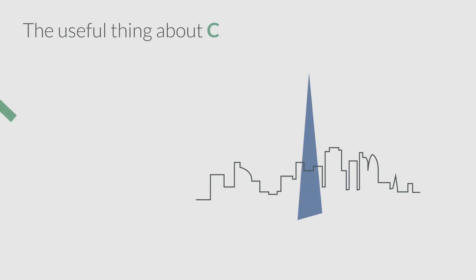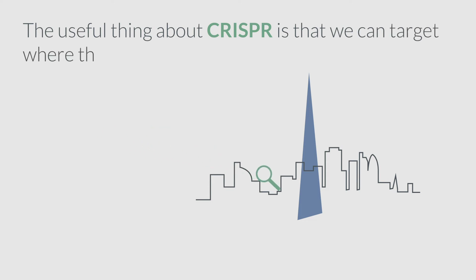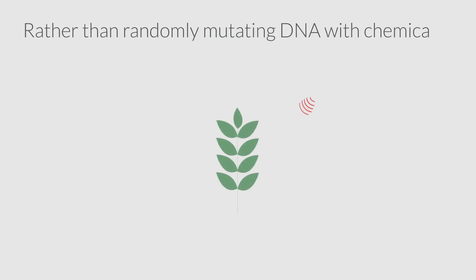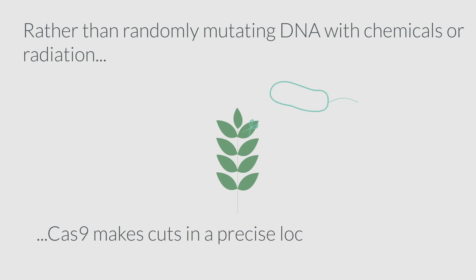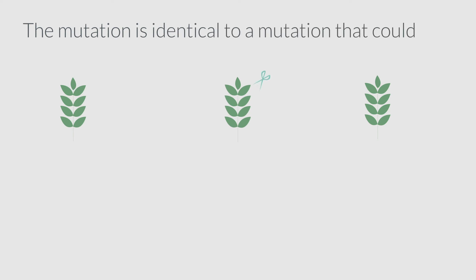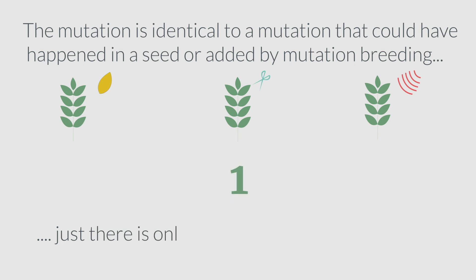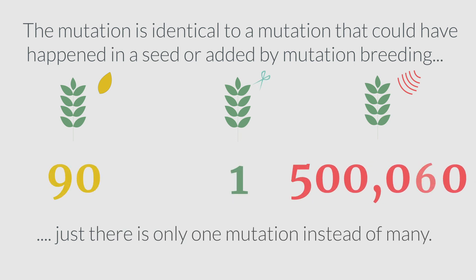The useful thing about CRISPR is that we can target where the mutation will be, instead of it being random. Rather than randomly mutating DNA with chemicals or radiation, Cas9 makes cuts in a precise location. The mutation is identical to a mutation that could have happened in a seed or been added by mutation breeding, only there is only one mutation instead of many.